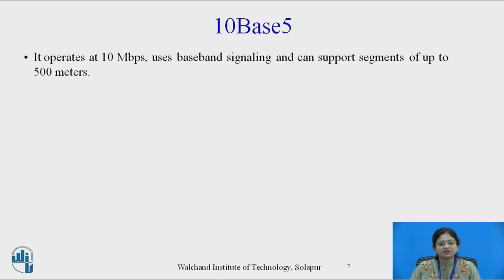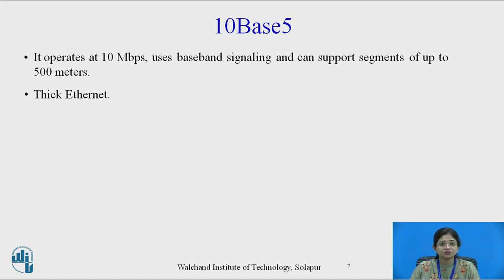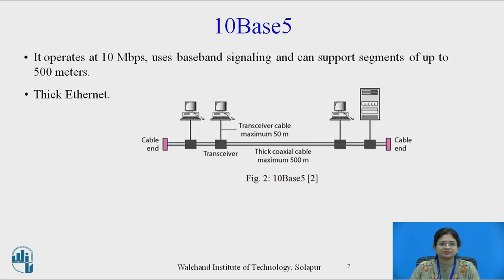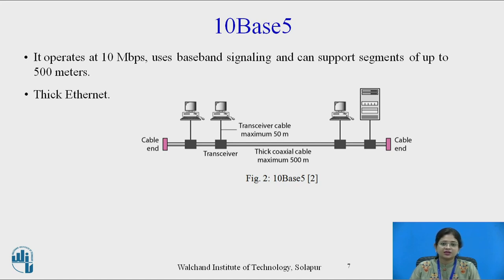Let me explain 10Base5 in detail. It operates at 10 Mbps speed, uses baseband signaling, and can support segments of up to 500 meters — meaning a new segment is allowed after every 500 meters. It is also known as Thick Ethernet. This diagram shows a number of PCs connected to coaxial cable, which is known as Thick Ethernet.